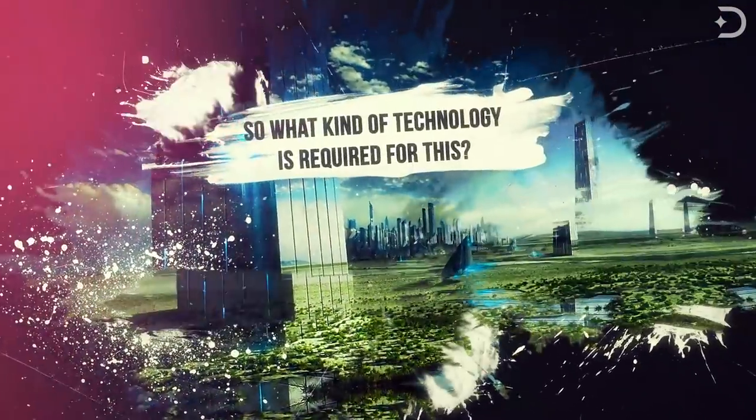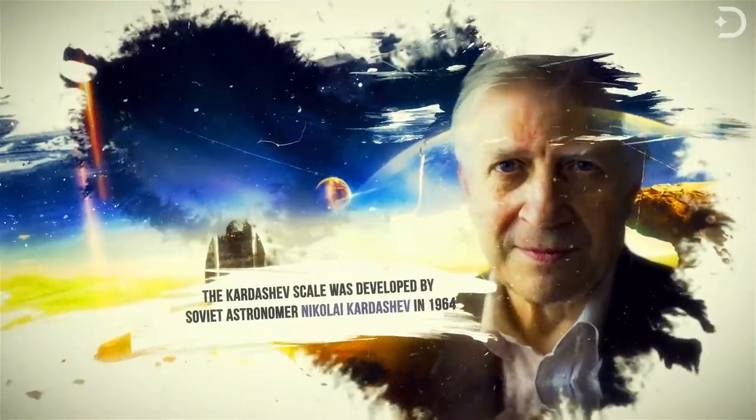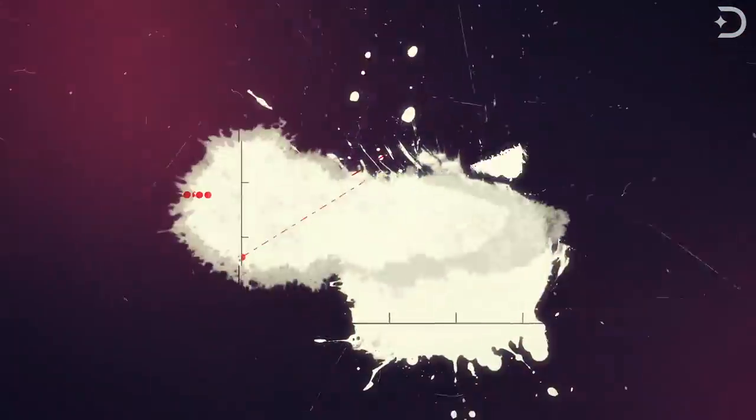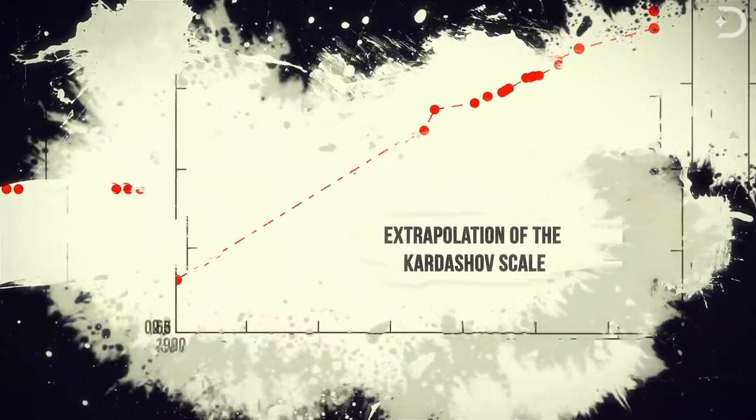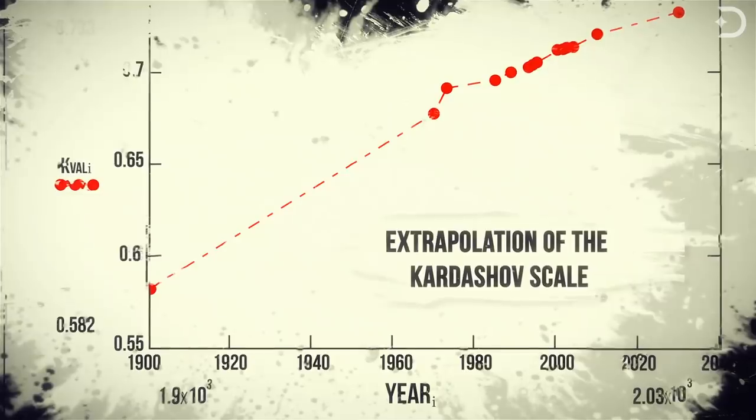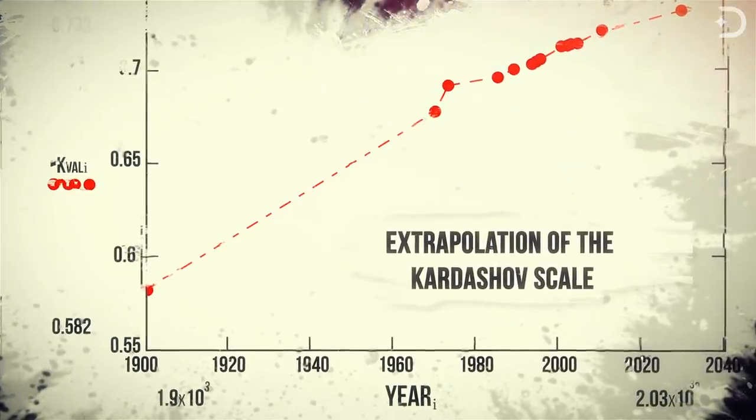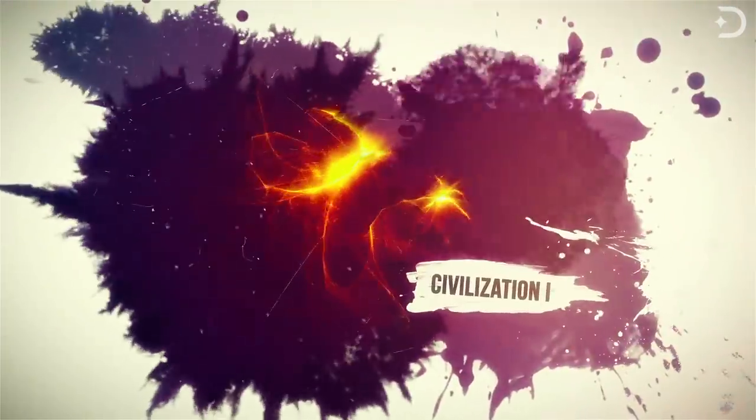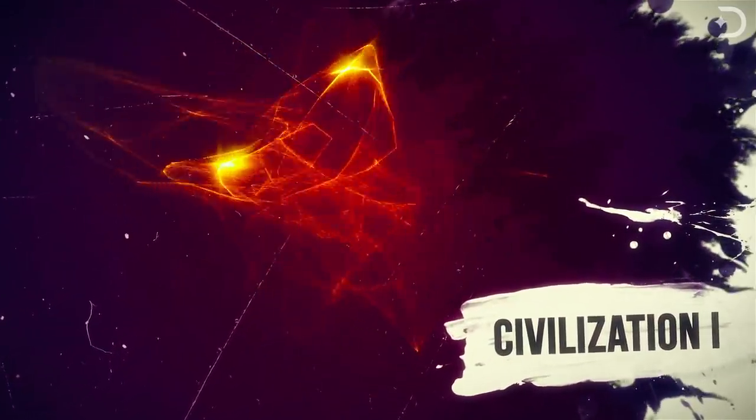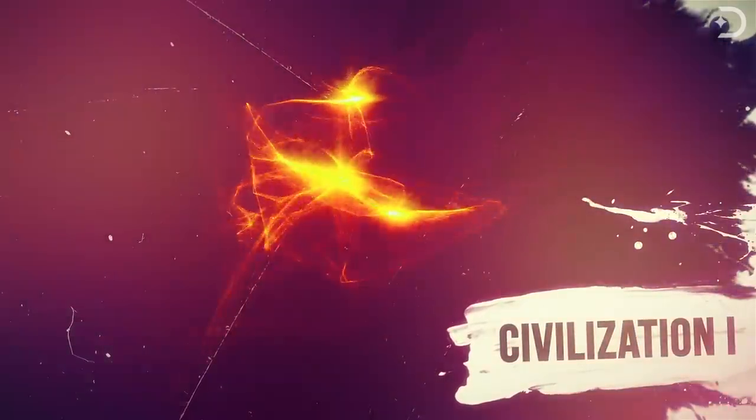So what kind of technology is required for this? The Kardashev scale was developed by Soviet astronomer Nikolai Kardashev in 1964 and is a method of measuring a civilization's level of technological advancement based on the amount of energy a civilization is able to use. A Type 1 civilization, which is also called a planetary civilization, can use and store all of the energy available on its planet. Sadly, humans have yet to reach this point.